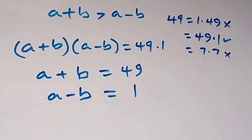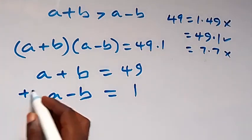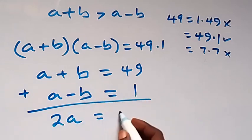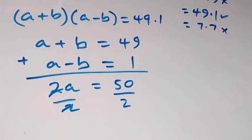So when we solve these two equations simultaneously, here we add them, so we have 2a now equals to 50. Then divide both sides by 2 here to cancel out and we have a equals to 25 from here.